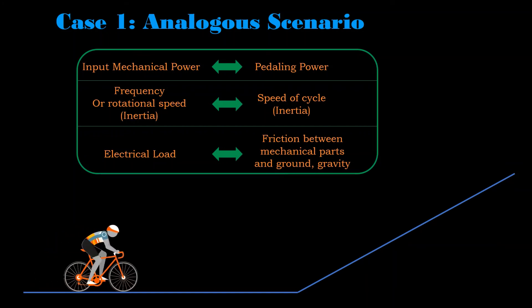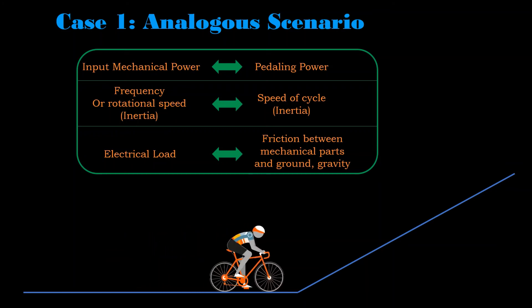Initially when we are on a plane surface and the friction forces are opposing the motion, and assume we are maintaining a constant speed. This is like the scenario when the mechanical input is satisfying the electrical load and also maintaining the rated frequency. Let's say we reached a hill.